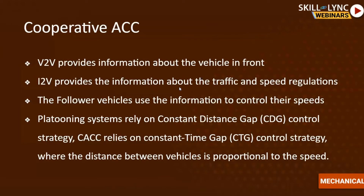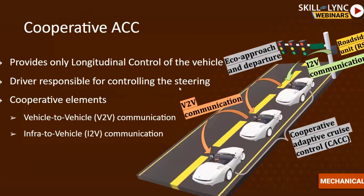Vehicle-to-infrastructure and vehicle-to-vehicle communication can exist without CACC — you just need a communication device in the car. However, in a CACC string, the advantage is that the infrastructure only needs to connect with the first lead vehicle. The lead car then relays that information to the other vehicles, so infrastructure does not need to continuously communicate with all vehicles in the string.